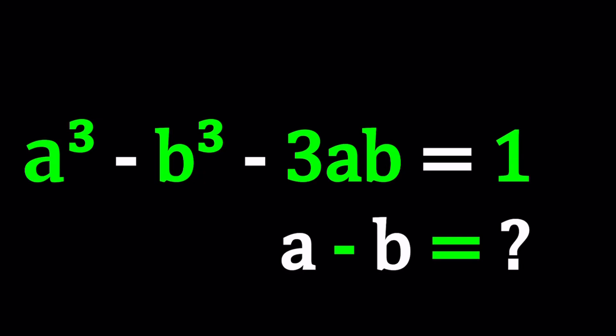Hello everyone. In this video, we're going to be dealing with a nice cubic equation. We've probably done a similar problem before. I hope I haven't made the same problem. If I did, I apologize. So we have a³ - b³ - 3ab = 1, and we're going to be solving for a - b. There's no specification about a and b being integers or natural numbers. a and b are real numbers. That's the only requirement we have.